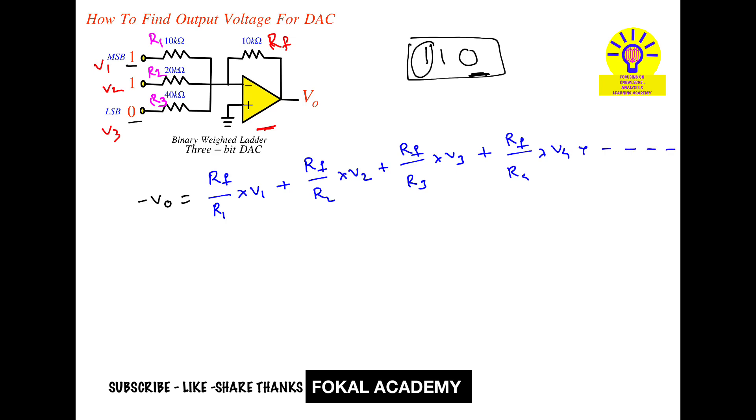But here given that it is 3 bit DAC means only having 3 inputs. So take the equation up to 3 times only because we have only V1, V2, V3. There is no V4. So consider the equation up to here.